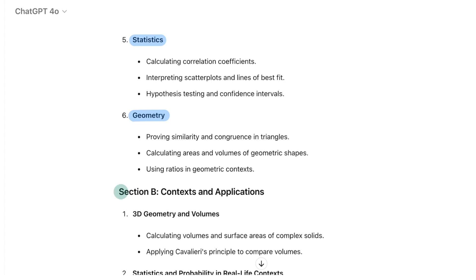Now let's move on to Section B, Contexts and Applications. This section will contain four questions. Question 7 3D Geometry and Volumes: Expect to calculate the volumes and surface areas of complex solids, and apply Cavalieri's Principle to compare different volumes.